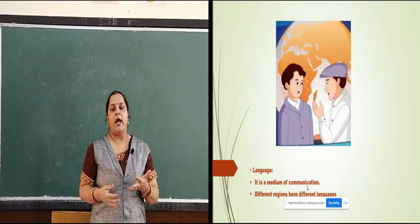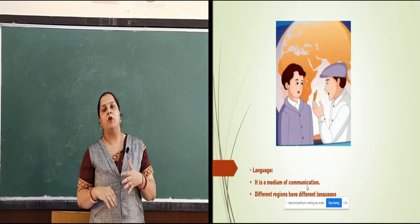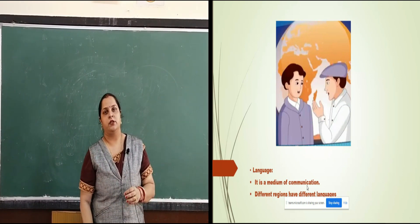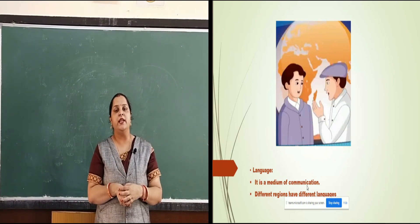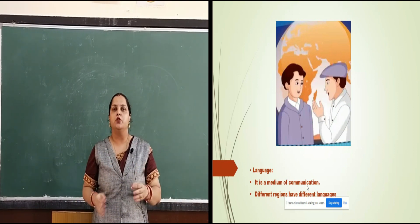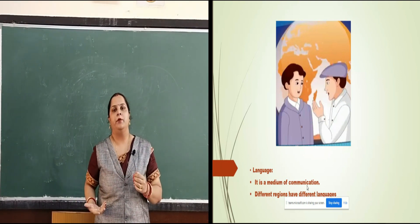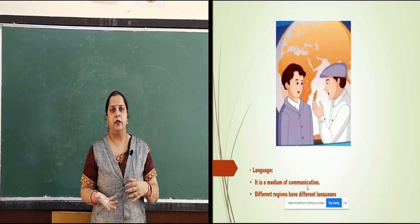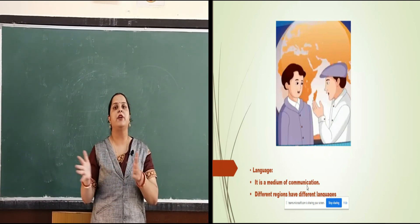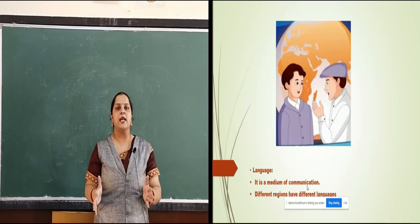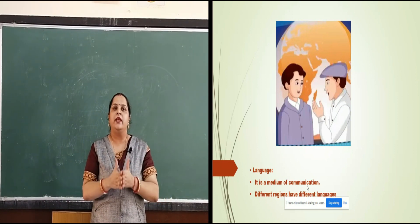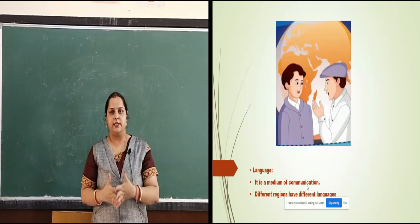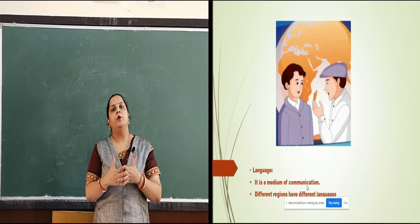The same thing happens with computers. We know human language and computers know computer language. Computer language is actually the machine language which consists of 0 and 1. When we give an instruction to our computer, it converts it into 0 and 1. What does the converting? That is the translator. In this chapter, we will discuss various types of computer languages, generations of languages, and the working of translators.